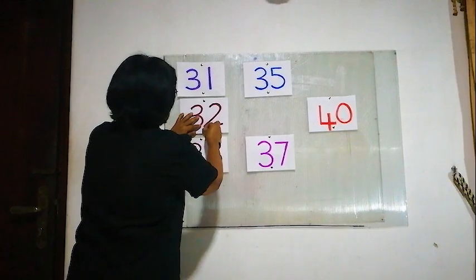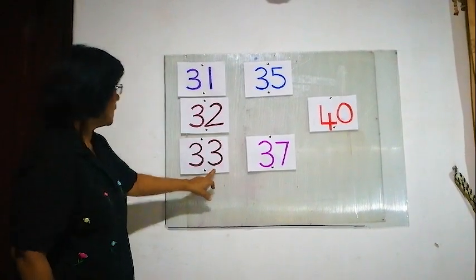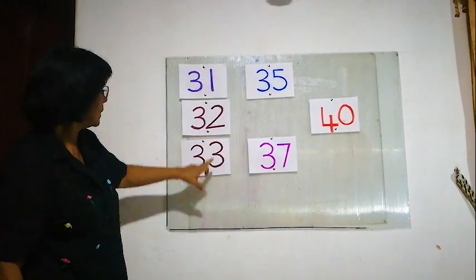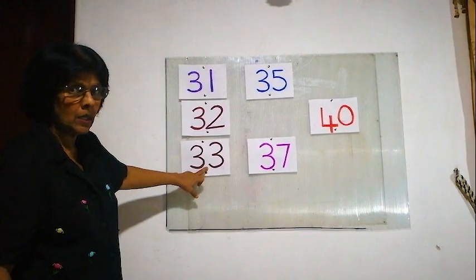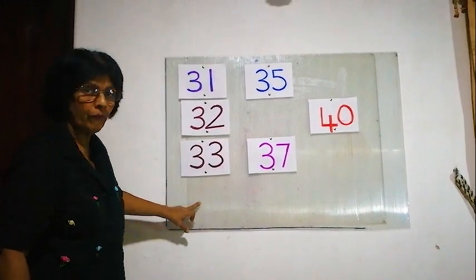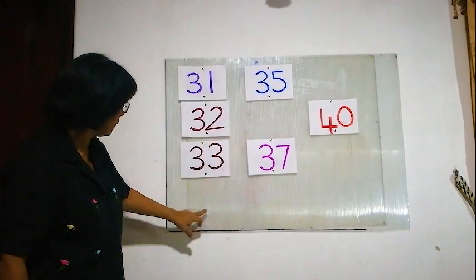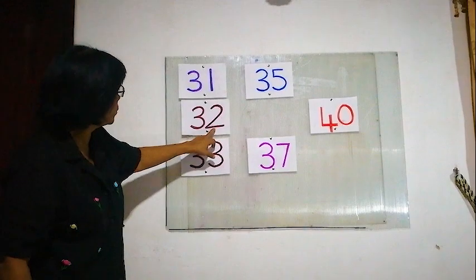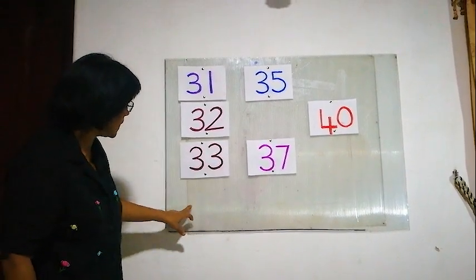Now the next number is here. 31, 32, 33. After 33, what is the number? 34. 31, 32, 33, 34.